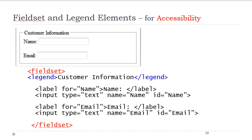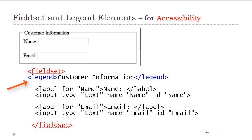The fieldset and legend elements are also used for accessibility. They logically group and relate form content. Here we have an opening and closing fieldset element, which places a box around it, and the legend. These are block-level elements.